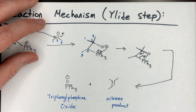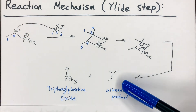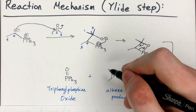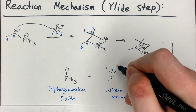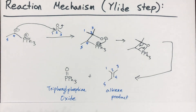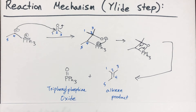The resulting products are your regioselective alkene — carbons one, two, and three from acetone and carbons four and five from the phosphonium ylid — and triphenylphosphine oxide as a byproduct. Keeping track of all your atoms is critical to this reaction.